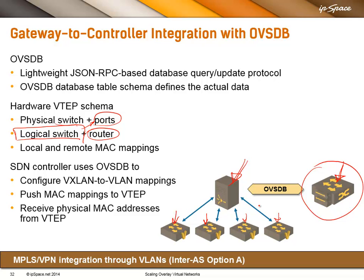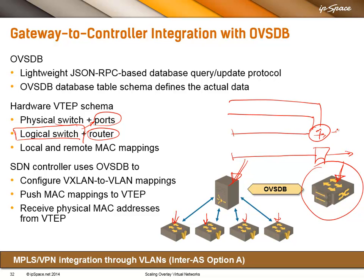The SDN controller can use OVSDB to configure VXLAN-to-VLAN mappings, push MAC mappings to the hardware gateway, and receive information about external addresses from the hardware gateway. With OVSDB, you can create subnets bridged to the outside world, or create logical switches routed to other logical switches and to the outside world — so you can establish Layer 2 or Layer 3 connectivity. If you want to integrate this with MPLS VPN, you have to integrate through external VLANs, like inter-AS option A.